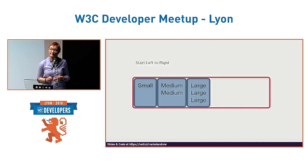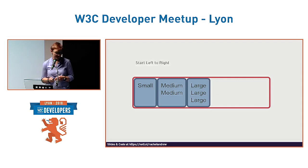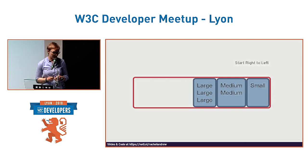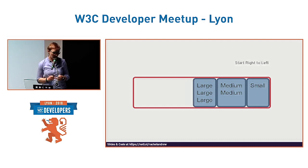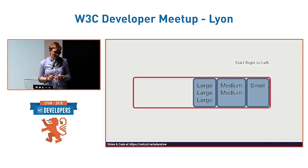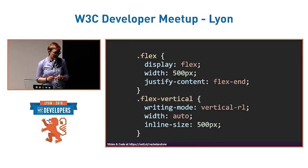The alignment properties started life in Flexbox and then made their way into the box alignment specification. With left-to-right text direction the start is on the left; with right-to-left text direction the start is on the right. Alignment in Flexbox is really about the distribution of space — our items here are taking up less space than available, so the spare space is placed at the end of the row.